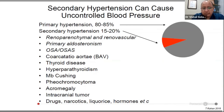Other secondary causes include primary hyperaldosteronism, hormonal disorders like Cushing's syndrome, pheochromocytoma, and patients taking drugs that interfere with the metabolism of various antihypertensives, narcotics, and hormonal therapies. These secondary causes of hypertension must be assessed before labeling a patient as having resistant hypertension, and we should treat them because otherwise blood pressure remains uncontrolled.